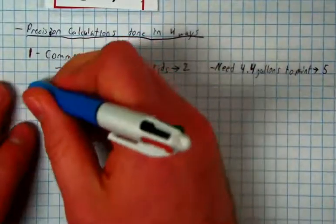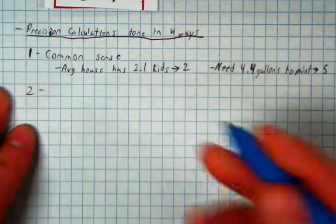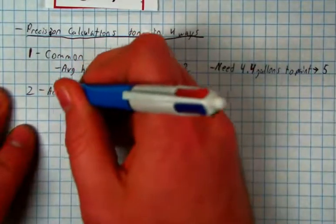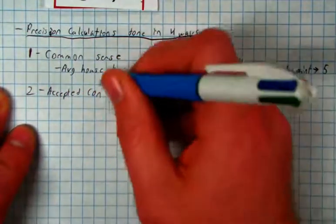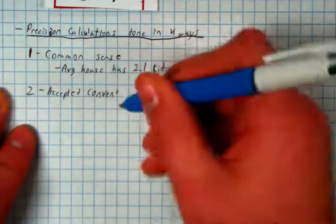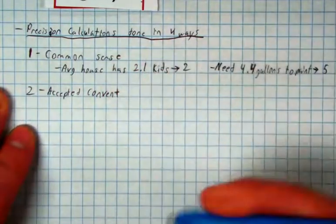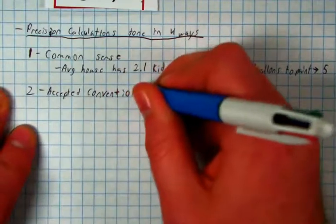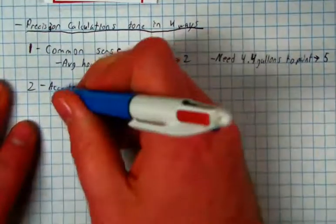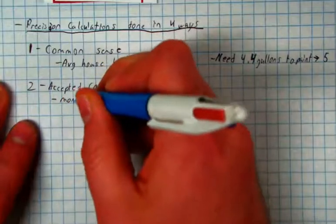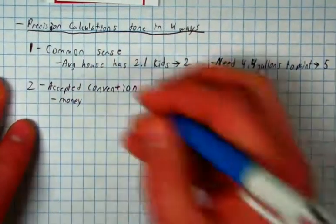The second way is accepted convention. So these are just rules that we all agree to. We all know it. It's kind of like common sense, but sometimes it's not that obvious, like it doesn't make sense to you necessarily, but it's still the accepted convention. For example, money.